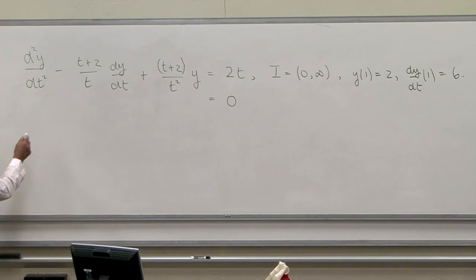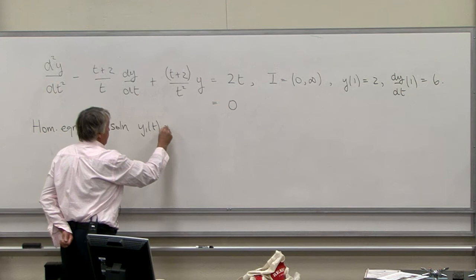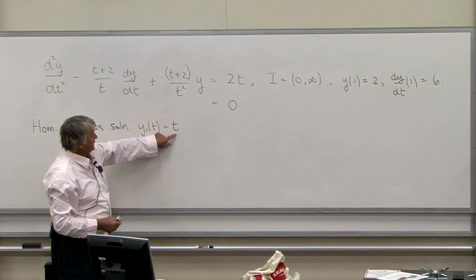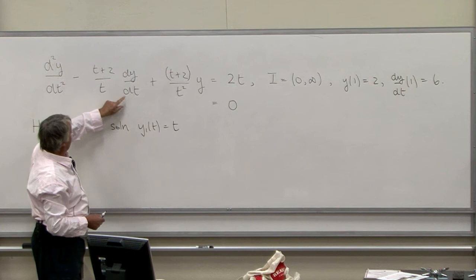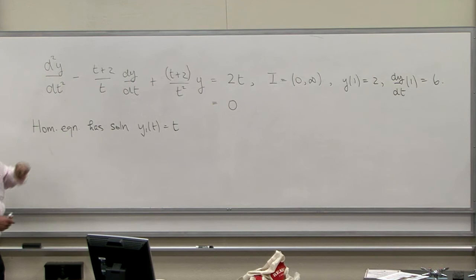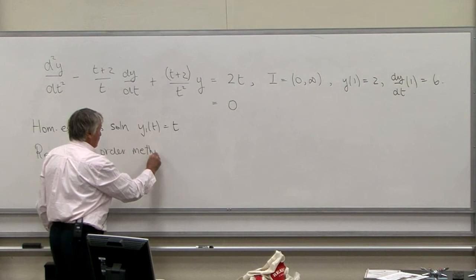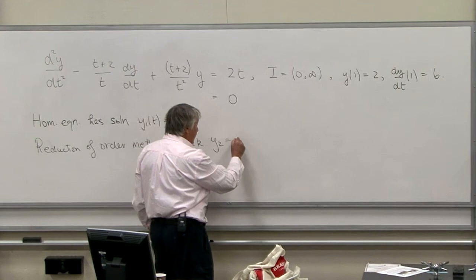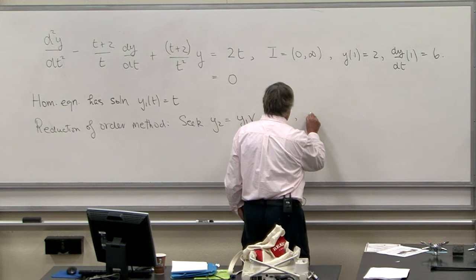A solution of the homogeneous equation is Y₁(t) = t. You can verify this: substituting t into the homogeneous equation with zero on the right-hand side gives t, and the term becomes (t+2)/t; dy/dt is 1, giving minus (t+2)/t, so it's an exact solution. Having that as Y₁, by the reduction of order method we seek Y₂ in the form Y₁ · V, which is tV.